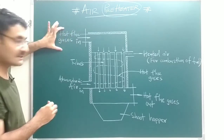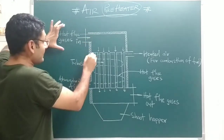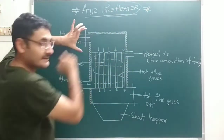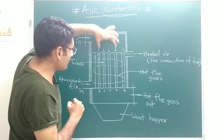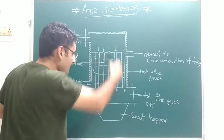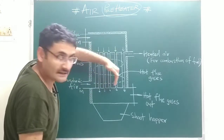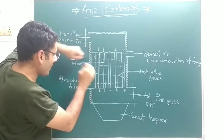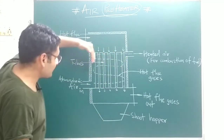Hot flue gases are present inside the chimney. Those hot flue gases are taken from the top side into the air preheater. After that, the hot flue gases enter inside the pipes. Those hot flue gases reject their heat to the pipes.